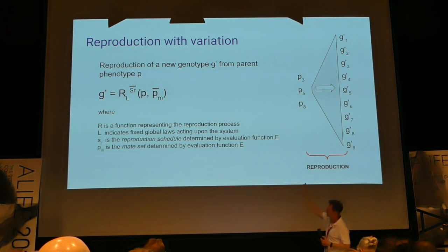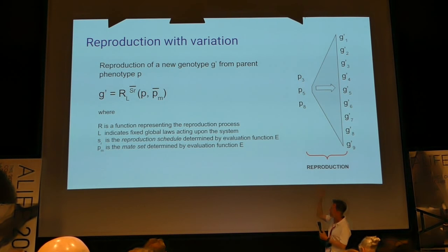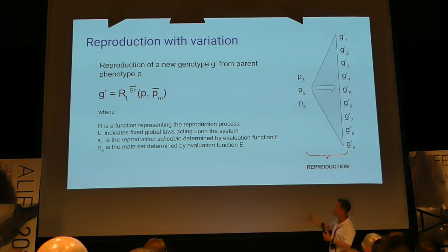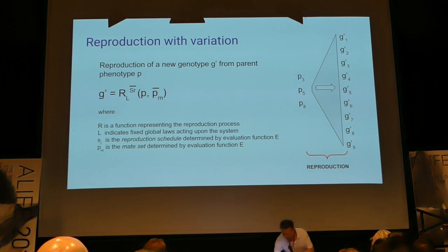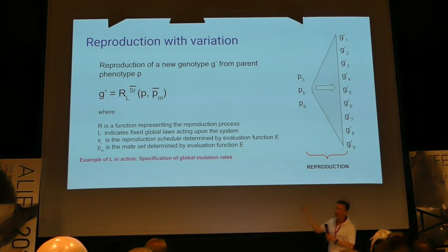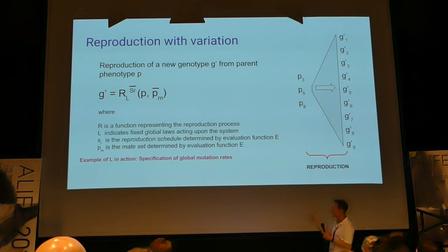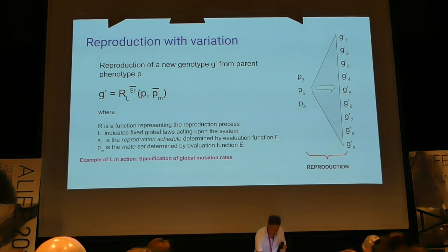Finally, reproduction with variation. R is the reproduction mapping, and this makes use of the reproduction schedule and also the mate set, both as determined by the evaluation. This is happening within the context of an environment — not necessarily a physical one; the same considerations apply to computational universes too. For example, the specification of global mutation rates is one thing the global laws will determine there.